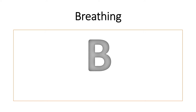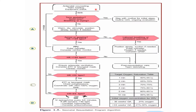Step B. This is the NRP algorithm. I have already explained the first part in the first two videos: before birth, antenatal counselling, team briefing, and equipment check. After birth, assess term, tone, and crying or breathing. If yes, routine newborn care. If no, start initial steps of resuscitation. After initial steps, evaluate the baby by heart rate, respiratory rate, SpO2, and cardiac monitoring.